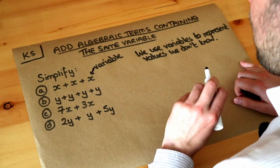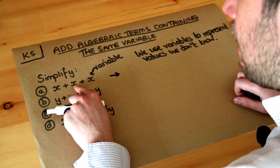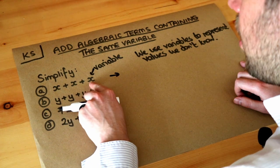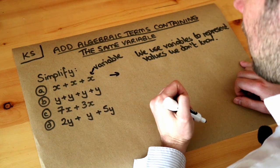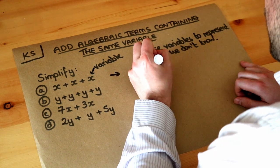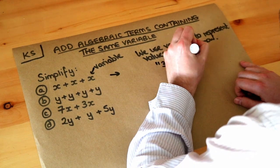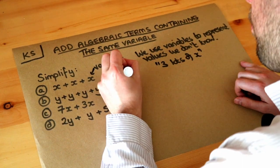And the way to do it is just to think of it in words. If you have x and you're adding another lot of x and you're adding another lot of x, how many lots of x do we have? Well in total we have three lots of x. So we have three lots of x and the way we write that is 3x.